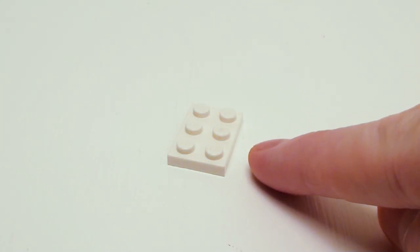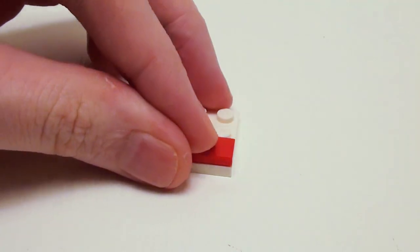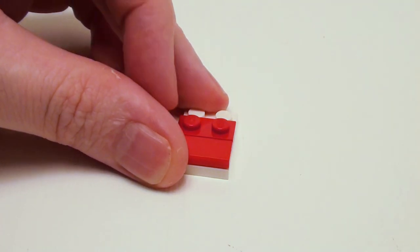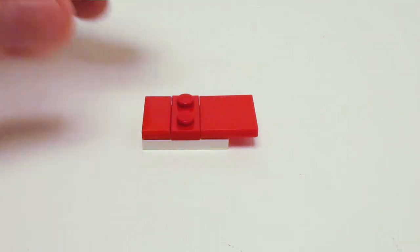For the chaise lounge chair, start with a 2 by 3 plate. Let's set down a 1 by 2 flat tile, a 1 by 2 plate, and a 2 by 2 flat tile where it's hanging over by a set of studs.